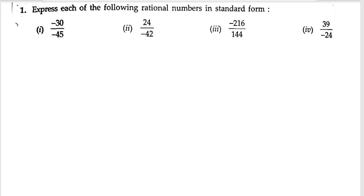First problem: express each of the following rational numbers in standard form. We need to express these rational numbers in standard form, so let us start the solution. That means we are going to cancel the numbers and whatever the remainder we get, that will be the final solution.